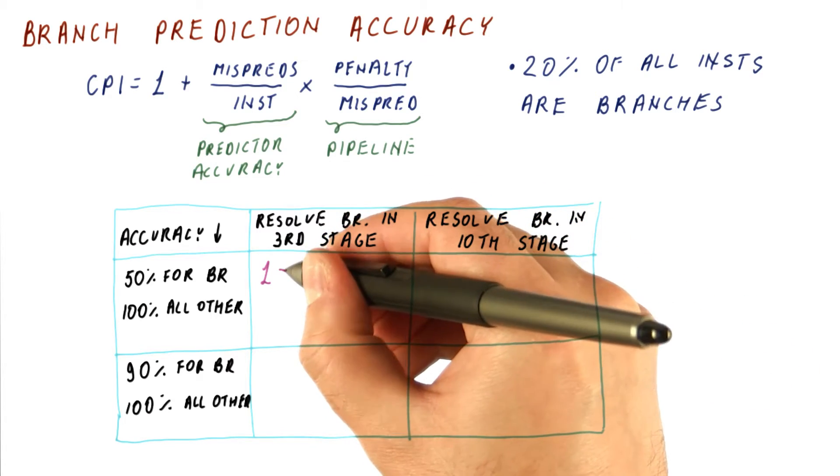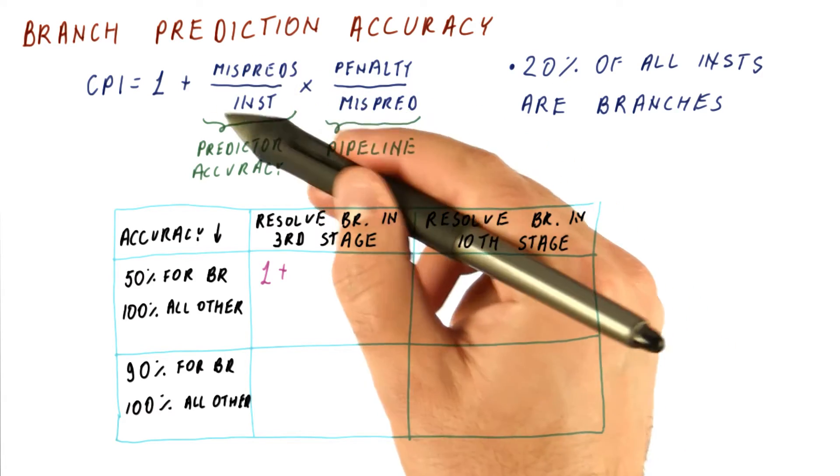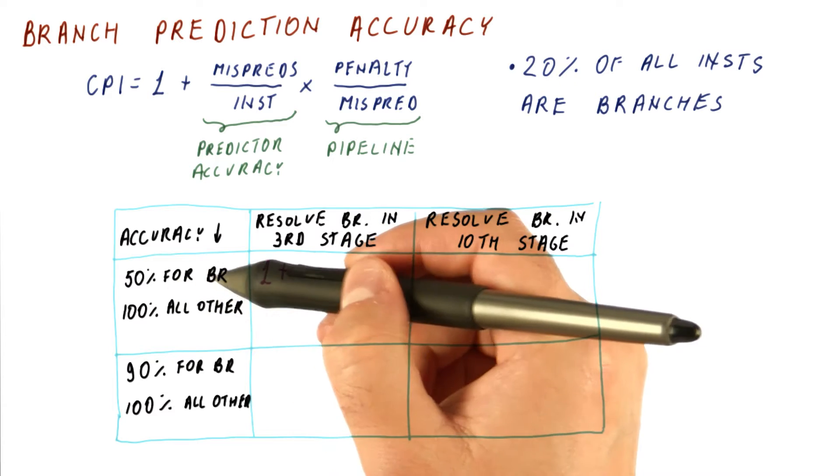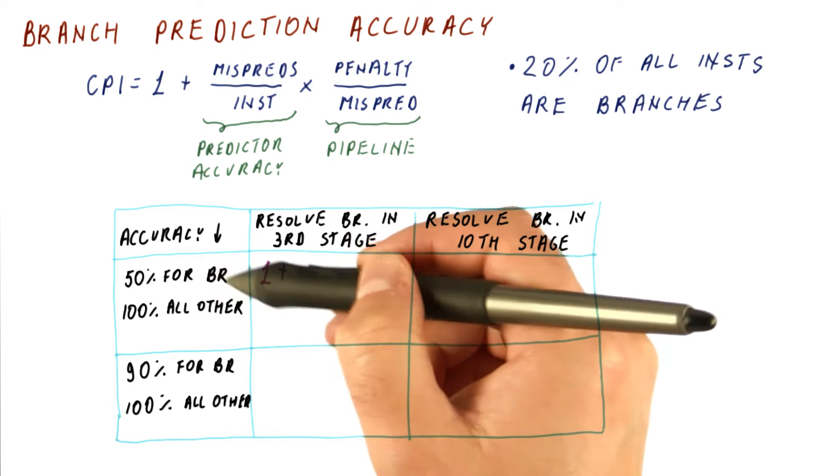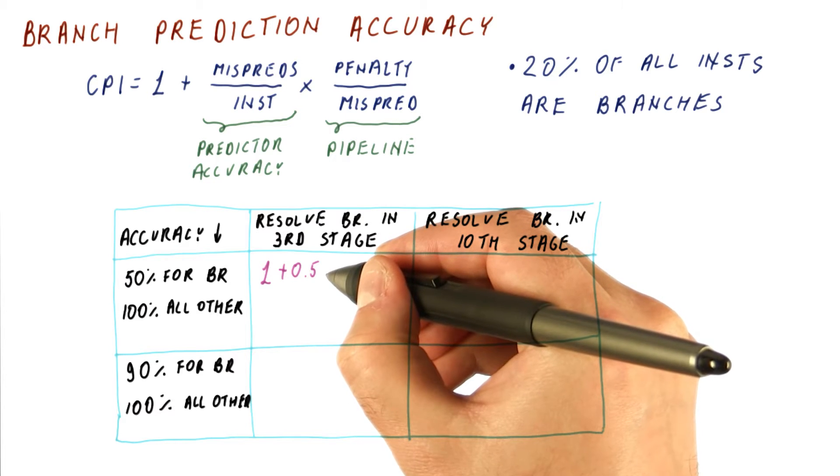Here we have a CPI of 1 plus how many mispredictions do we get per instruction? We get 50% misprediction for branches, so we get 0.5 of branches are mispredicted.